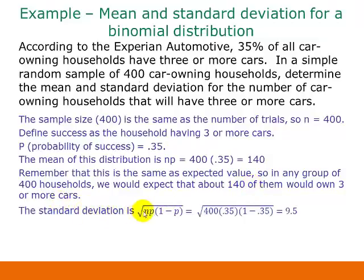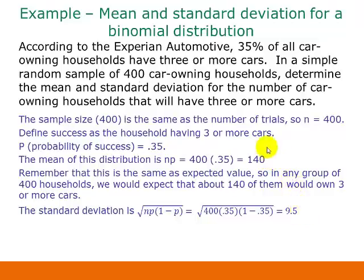For the standard deviation, this is an easy formula. All we have to do is take the square root of n times p times 1 minus p, and that gives us 9.5. So, thinking about mean and standard deviation, we've got a mean of 140 and a standard deviation of 9.5.